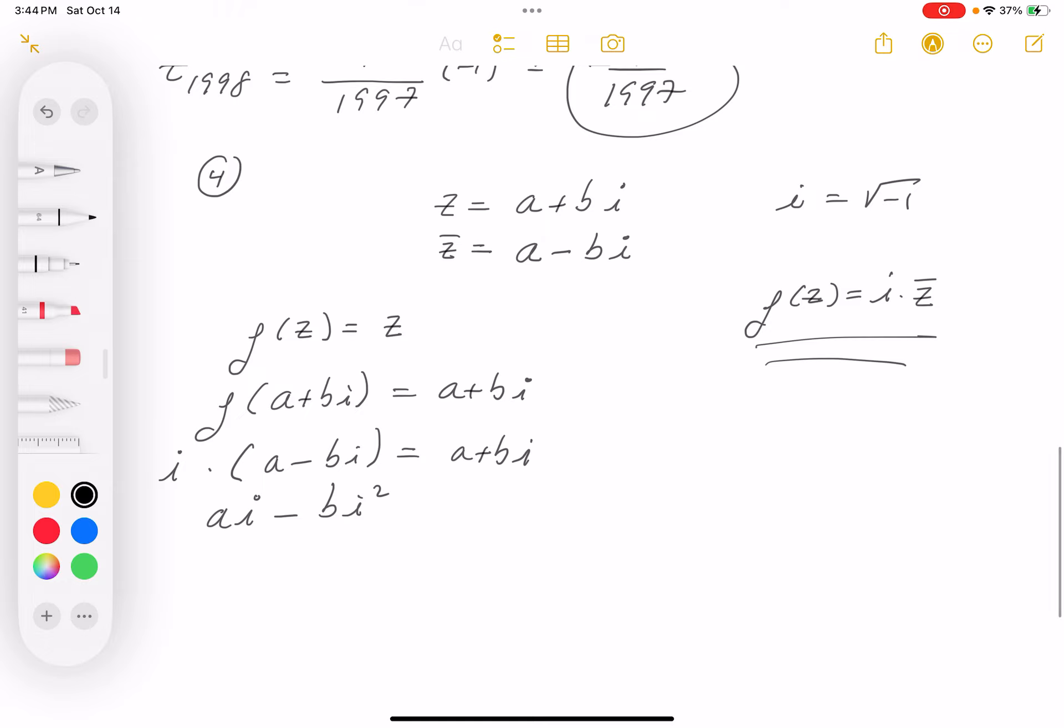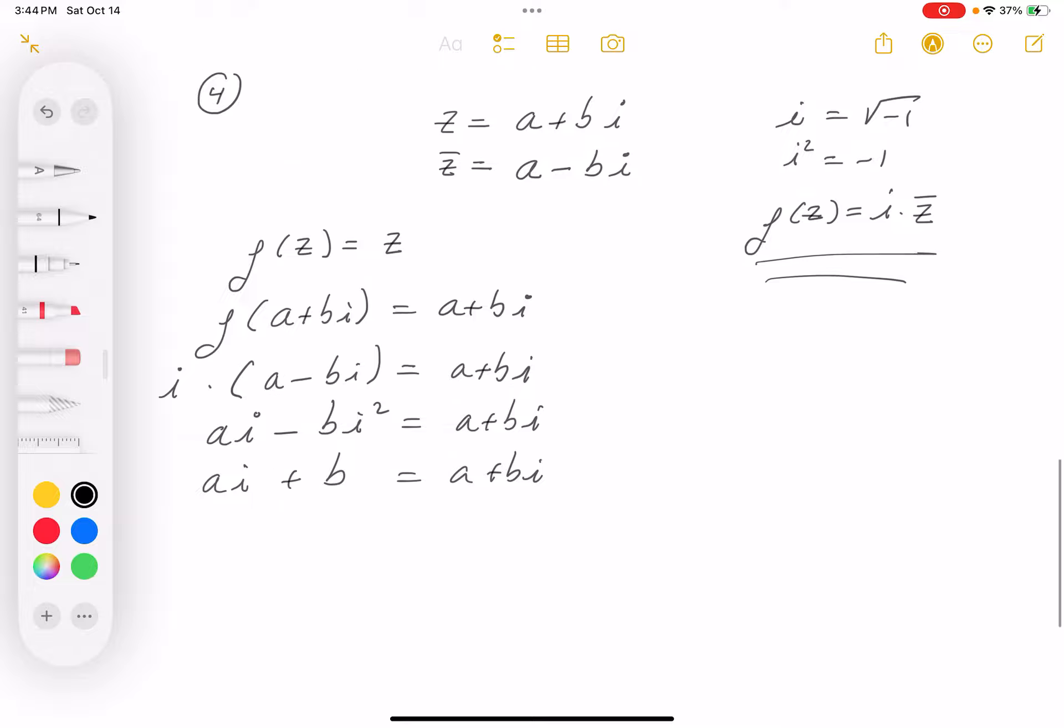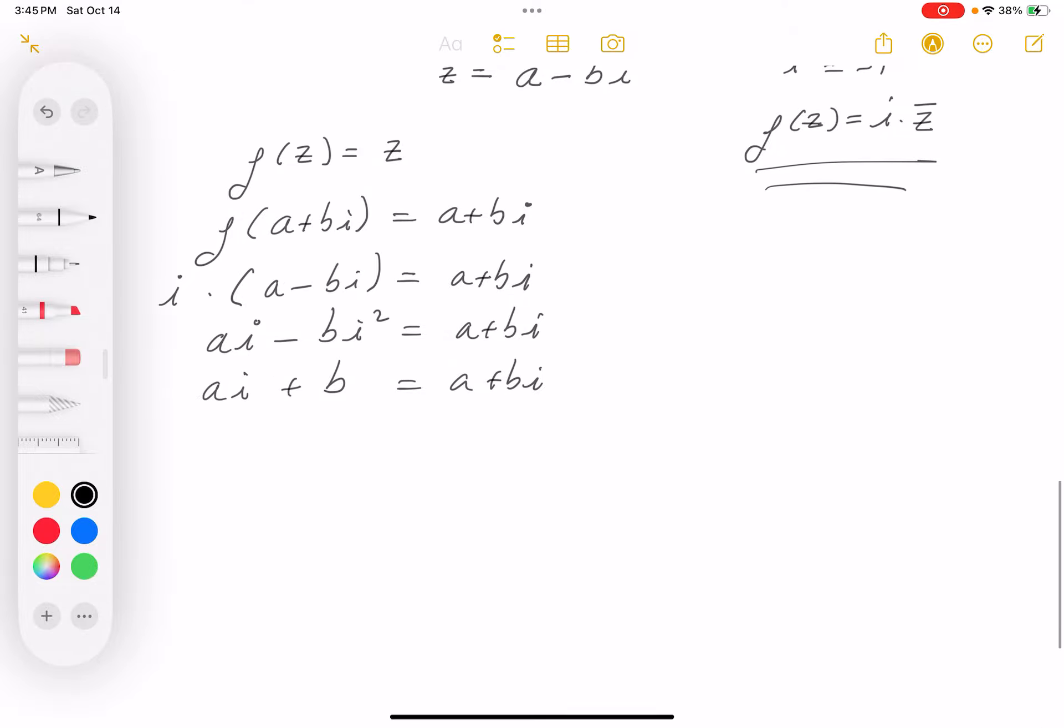Let me remind you, if i is equal to the root of minus one, i squared is equal to minus one. So I'm still equal to a plus bi. Let me keep going through this. I'm going to write it in a different order. It's going to be b plus ai equals a plus bi. Well, the only way for this to be true is if a is equal to b.